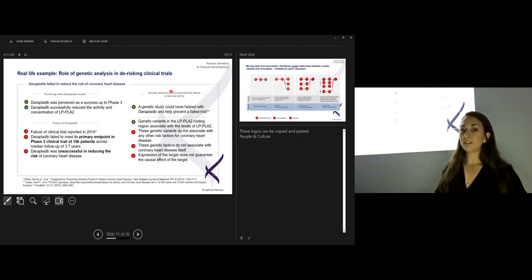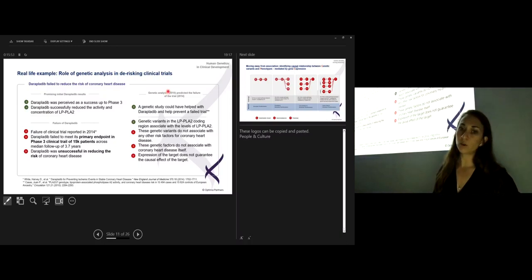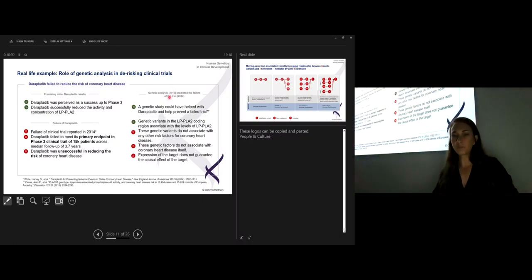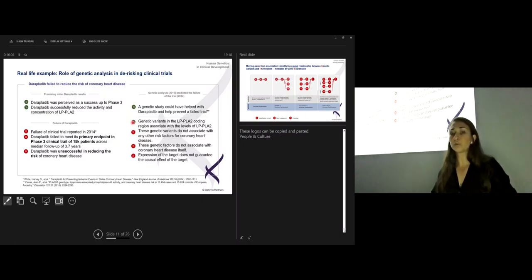However, in 2014, it was published as a failed clinical trial. Even though it was tested in more than 15,000 patients for almost four years, it sadly failed to meet its primary endpoints. And thus, it was proven to be unsuccessful in reducing the risk of coronary heart disease. A study in 2010 that was attempting to integrate Mendelian randomization as a causal inference tool for genetics actually predicted the failure of the trial a few years before it was officially published as a failed trial. What the authors showed was that the genetic variants that were linking to LpPLA2 were associated with the levels of LpPLA2. So lower effect was linked to lower levels of LpPLA2 and vice versa. But they also showed that these same genetic variants did not associate with any other risk factors for coronary heart disease, and in fact, the same genetic factors did not associate with coronary heart disease itself.